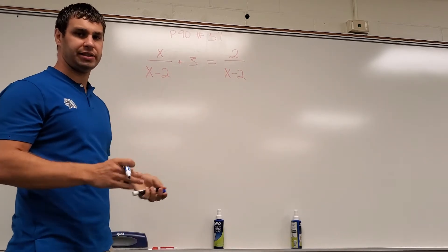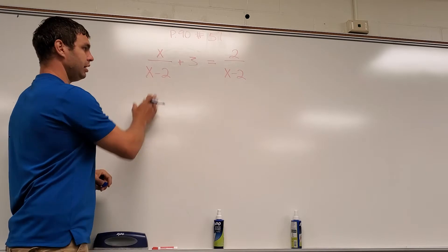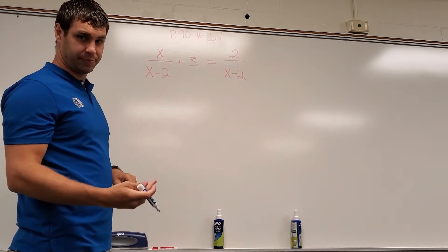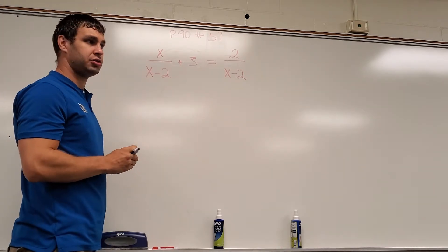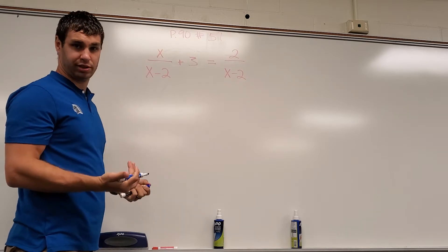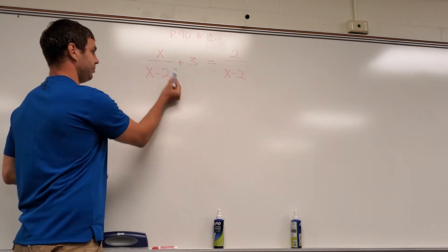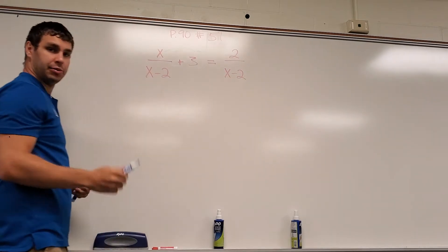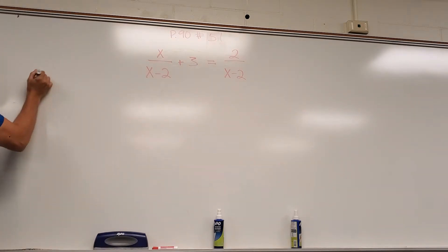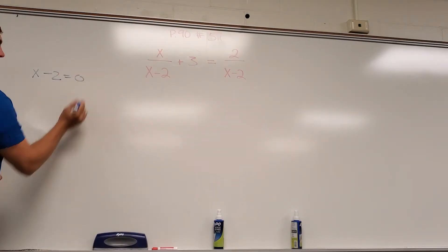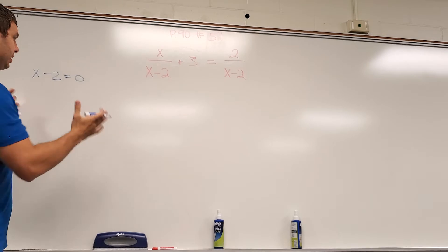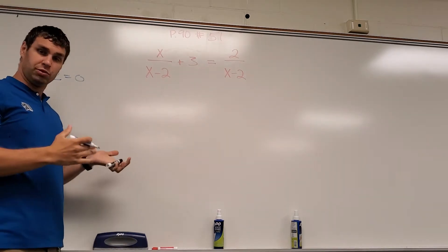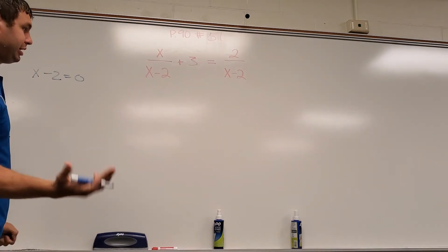So when we do a problem like this, when we have a variable on the bottom, we need to always remember that there are solutions that will not work. In order to figure those out, we need to set the bottom, since they're both the same. I'm just going to take x minus 2. We're going to set that bottom equal to 0. And so whenever this is equal to 0, that cannot be a value that works.